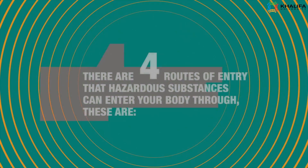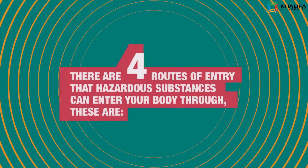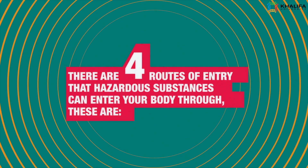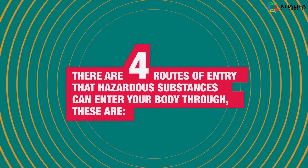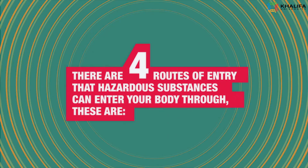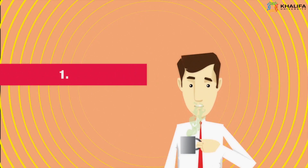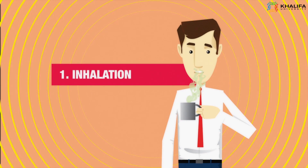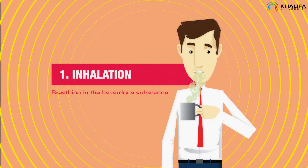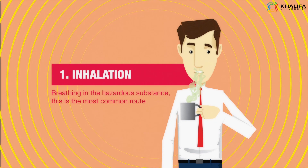There are four routes of entry that hazardous substances can enter the body through. These are: 1. Inhalation — breathing in the hazardous substance. This is the most common route of entry.